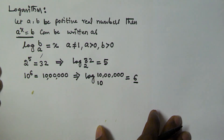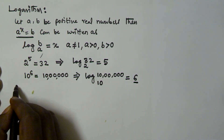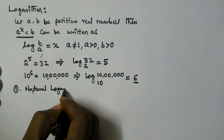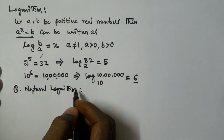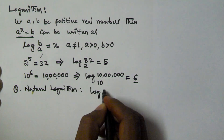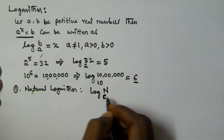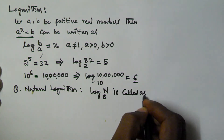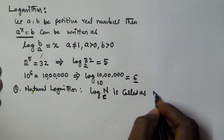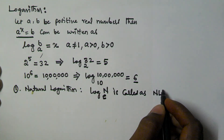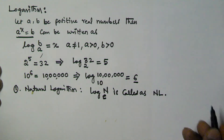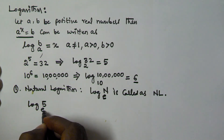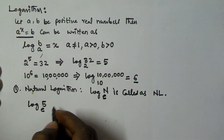Now there are two types of logarithms. The first one is natural logarithm. When the base is e, it is called a natural logarithm. For example, log 5 base e is a natural logarithm.